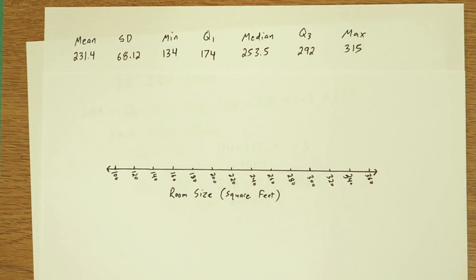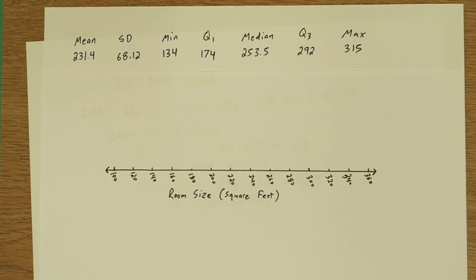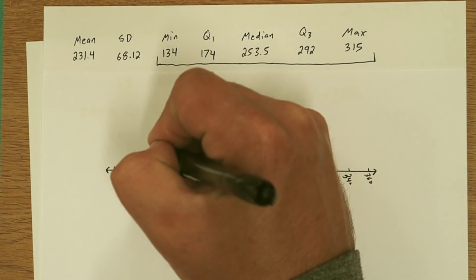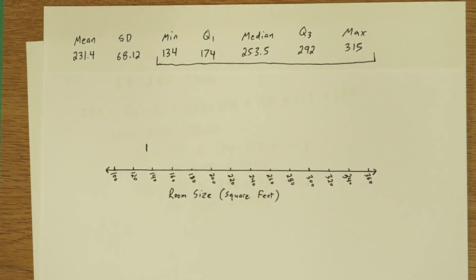So with no outliers, we're ready to make a box plot. To make a box plot, you have to use your five number summary, that's these numbers right here. So we're going to start by making a small vertical line at 134, the minimum, then another small vertical line at the maximum, 315.